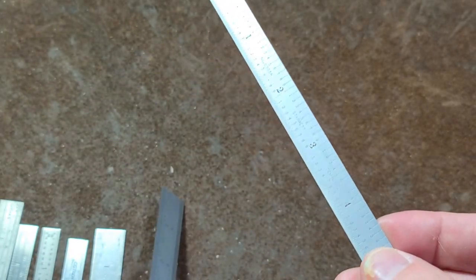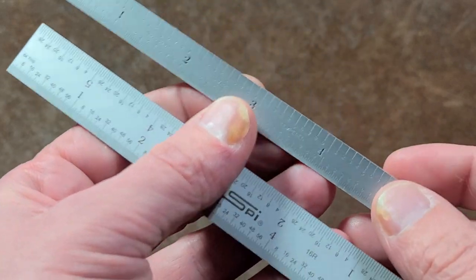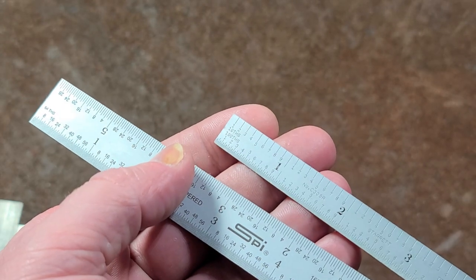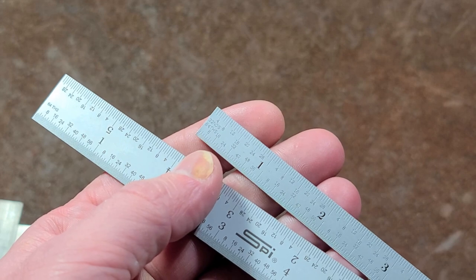These are known as the small flexible machinist rules, whereas this SPI is a standard one. The other difference that you'll find is one side will be fractional. It's really hard to see, but the back side would be 32nds and 64ths.